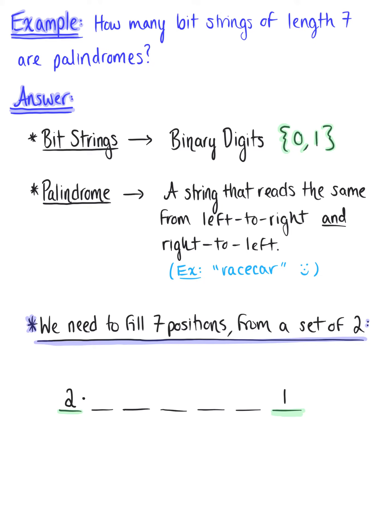Now going to our second position, we know that the second position also has two choices, zero or one. And again, keeping in mind that this is a palindrome, the sixth position must match the second position, meaning the sixth position has one choice.